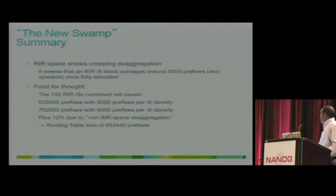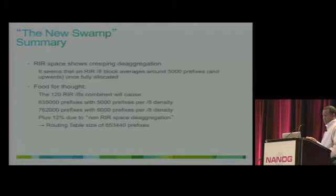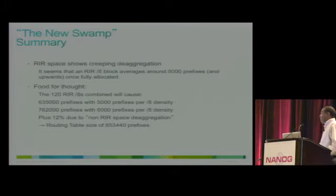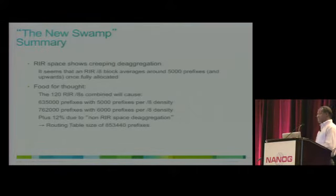The 120 RIRs combined, if they generate 5,000 prefixes per /8, will increase the internet routing table to over 635,000. If that number goes to 6,000 per /8 as per the trend, the internet routing table may go to 762,000 and beyond.